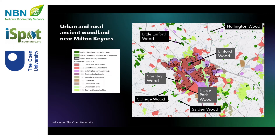Four woodlands in more rural areas — Little Linford Wood, Hollington Wood, College Wood and Soldon Wood — were identified as suitable comparator sites for the Milton Keynes woodlands based on size and soil type. By comparing the flora of these urban and rural woodlands, I hope to understand whether urbanisation has affected the communities of woodland plants.